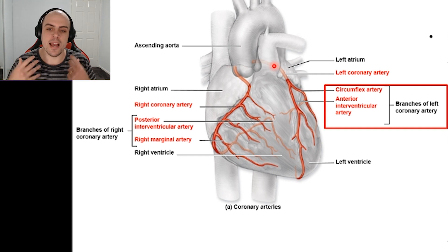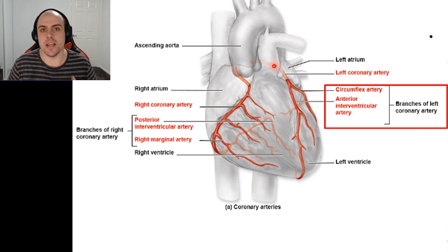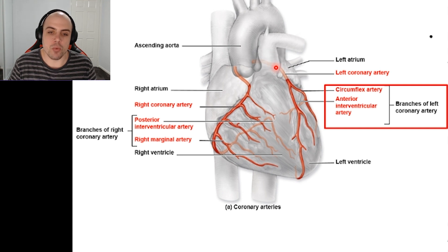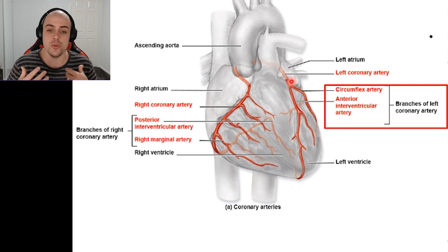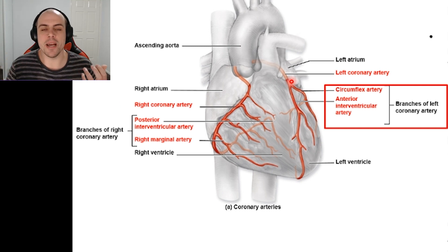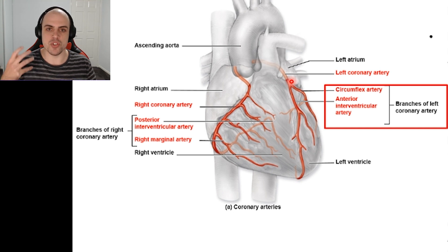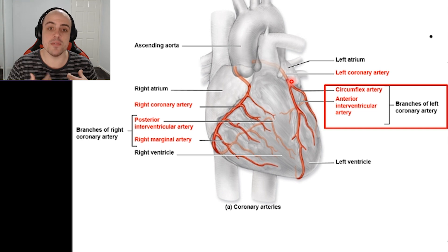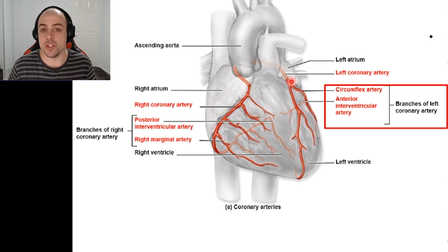The anterior interventricular artery also has a nickname: the widow maker. The reason for that is that if there is a blockage to the anterior interventricular artery, it most likely results in death due to that infarct. That lack of blood supply causes massive deterioration to the tissue, huge tissue death, and the heart will not function properly.